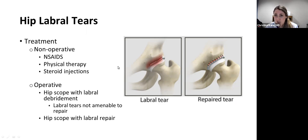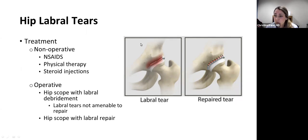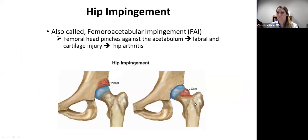Surgery is indicated for patients who fail conservative treatment, or for younger patients with a big labral tear where we may go straight to surgery. The treatment is a hip scope, or hip arthroscopy — minimally invasive with small poke holes around the hip. If the labral tear is poor quality and can't hold a suture, we debride and clean it up; if it's good quality, we try to repair it. Here you can see sutures holding together the labral tear and restoring its anatomy.